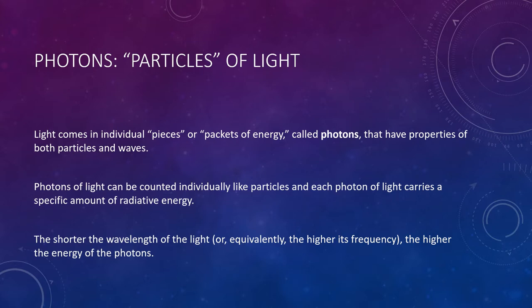Experiments have shown that light behaves as both a wave and a particle. We say that light comes in individual pieces, or packets of energy, called photons, that have properties of both particles and waves. Like baseballs, photons of light can be counted individually and can hit a wall one at a time. But like waves, each photon is characterized by a wavelength and a frequency. Just as a moving baseball carries a specific amount of energy, each photon of light carries a specific amount of radiative energy. The shorter the wavelength of the light, or in other words, the higher its frequency, the higher the energy of the photon. If the wavelength is really small, like you see in gamma rays or x-rays, that is a very energetic light. But if it's a big wavelength, something like a radio wave, it has less energy.